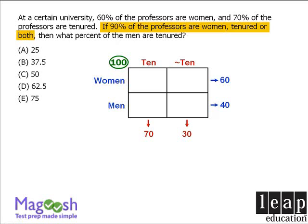Now this last piece of information: 90% of the professors are women, tenured, or both. What squares are we referring to in our matrix? People in one square are female tenured professors, people in another are untenured female professors, and people in another are male tenured professors. So this 90% refers to people in any one of those three boxes, meaning 90 people are distributed among those three boxes.